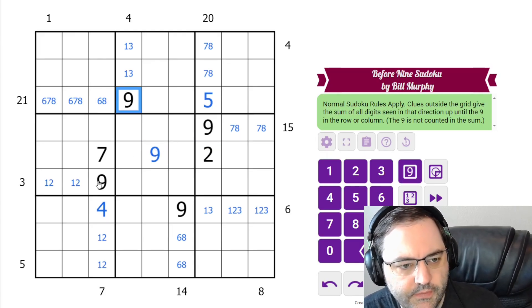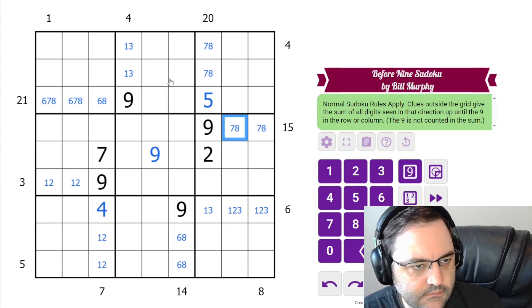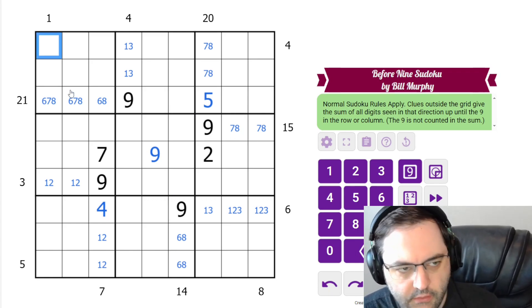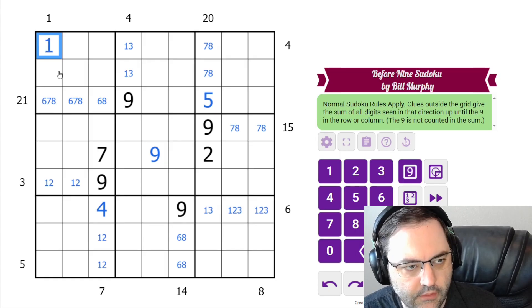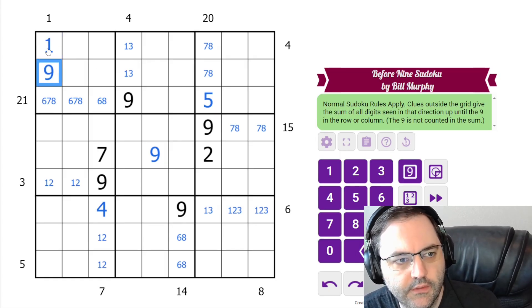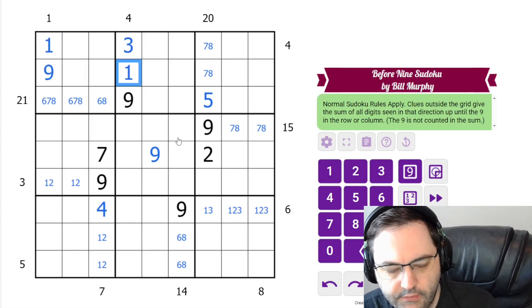Let's put a 9 there, since we've got 9s looking in. So this clue, how do we have a sum of 1 before the 9? The only way to do that is a 1. So let's put the 1 there, and that resolves 3 and 1.